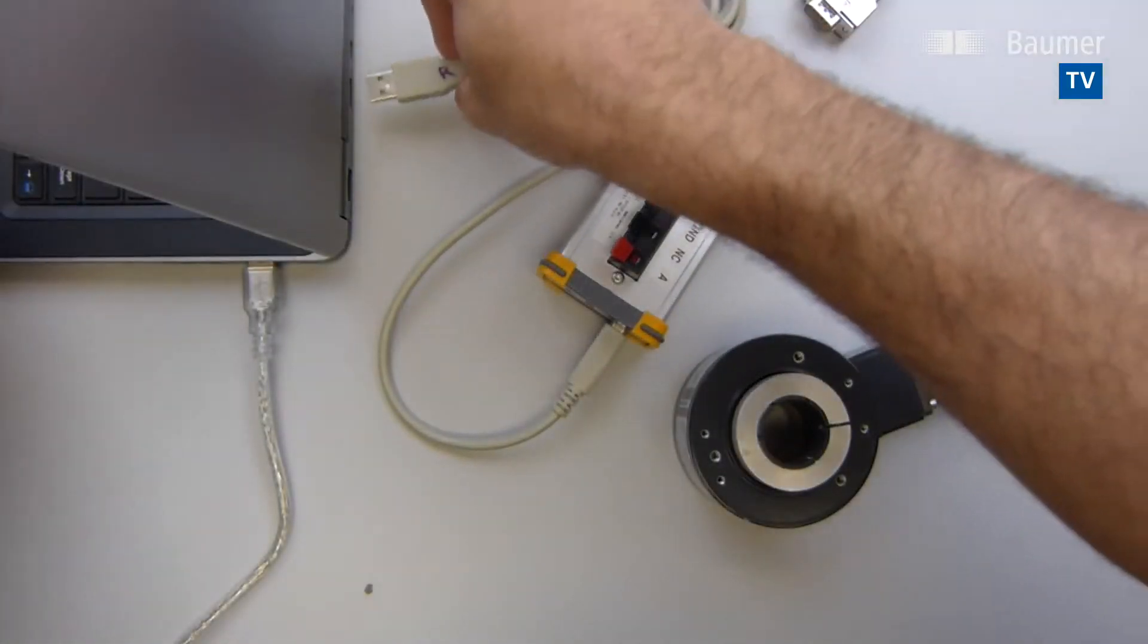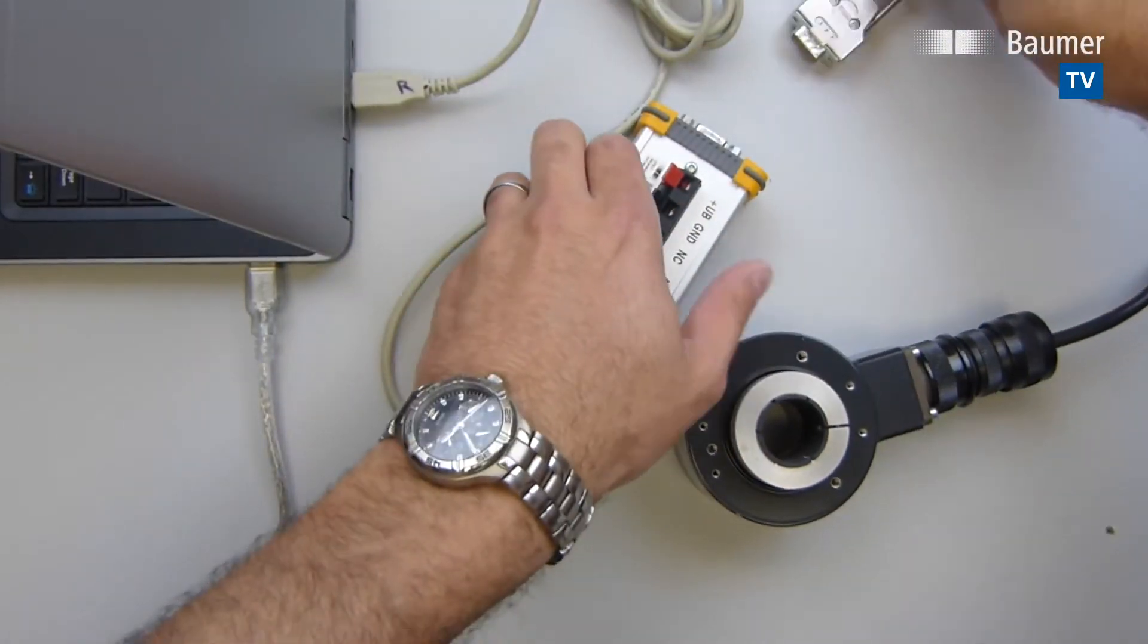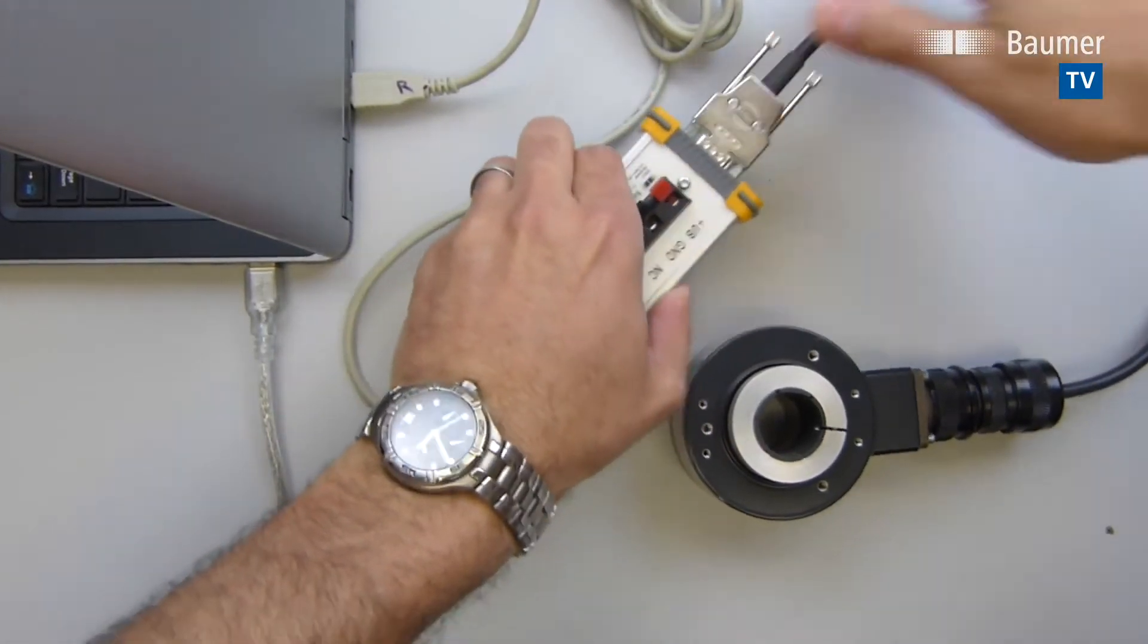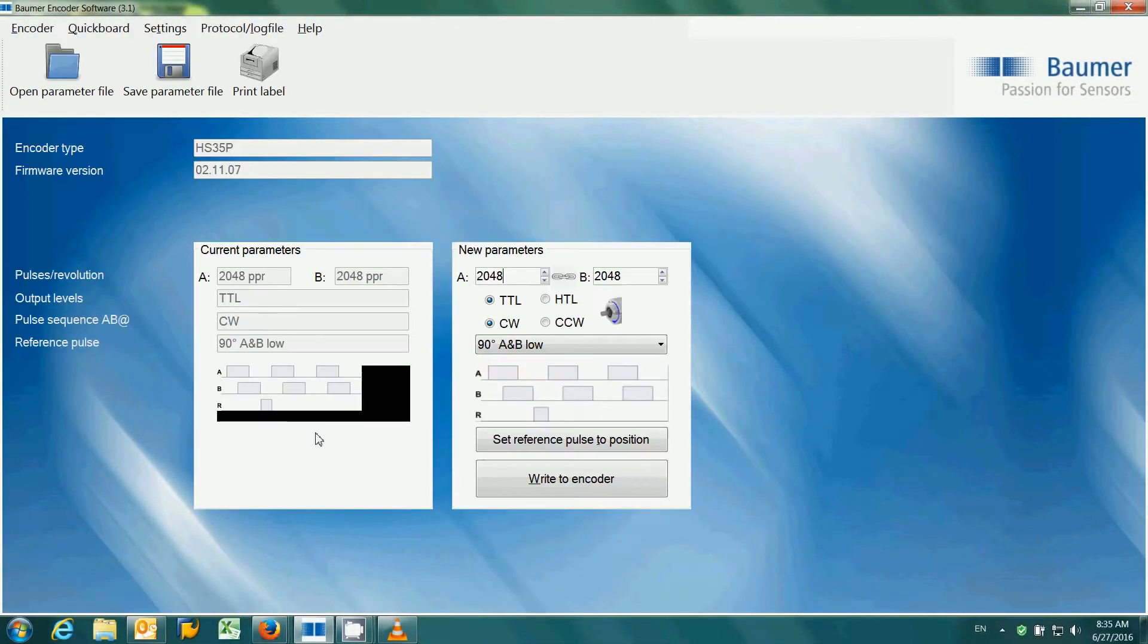Just plug in the USB connection between the programming interface and the computer, connect the encoder via the mill connector, and the software connects and loads the current settings from the encoder. Then just change the settings as needed, click write to encoder, and we're done.